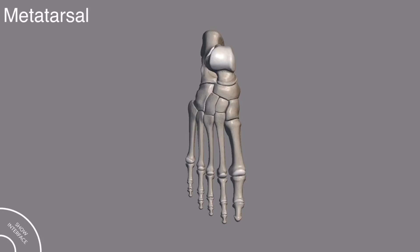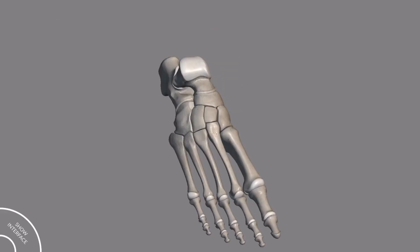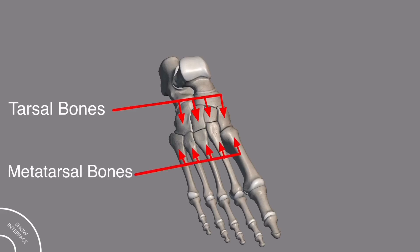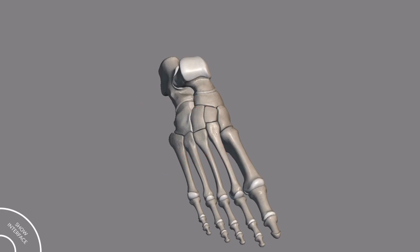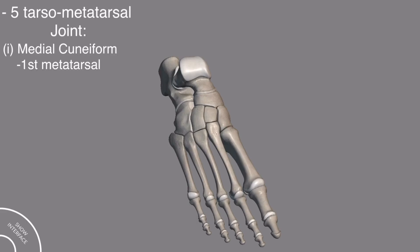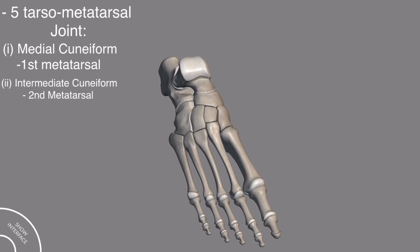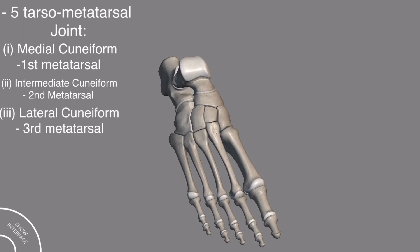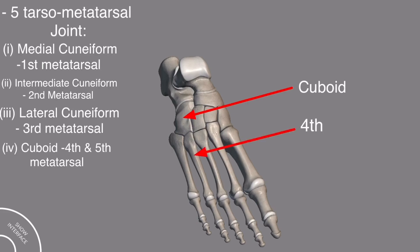Now let's move our discussion toward the metatarsal and phalanges. There are five metatarsal bones. An important joint related to the metatarsal bones is the tarsometatarsal joint — the joint formed between the tarsal bone and the metatarsal. There are five tarsometatarsal joints in one foot: the first between the medial cuneiform and first metatarsal, the second between the intermediate cuneiform and second metatarsal, the third between the lateral cuneiform and third metatarsal, and the fourth and fifth between the cuboid bone and the fourth and fifth metatarsal bones.